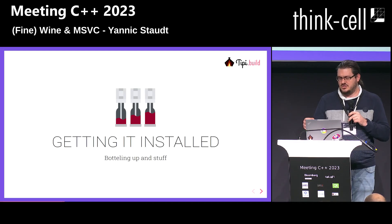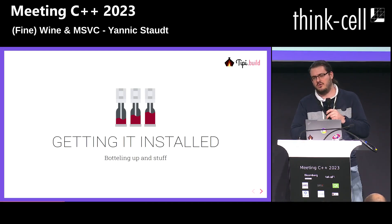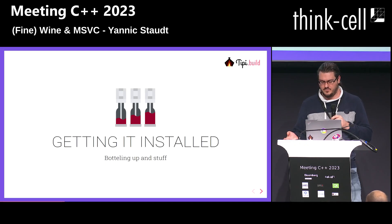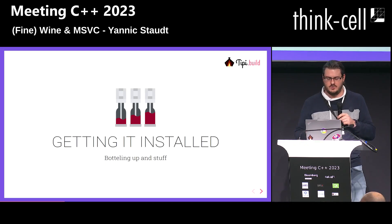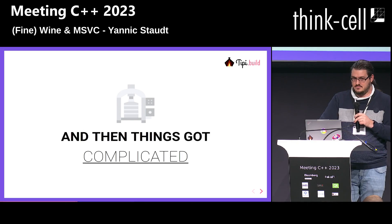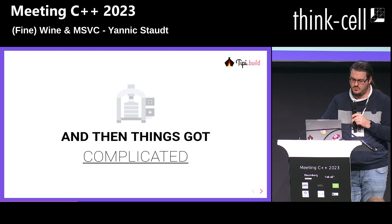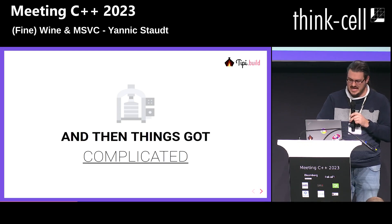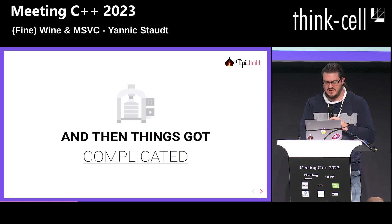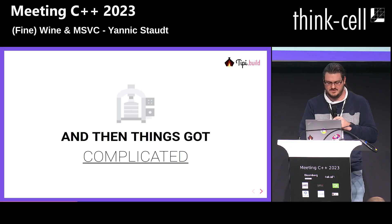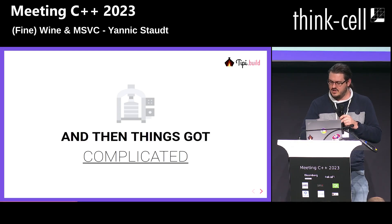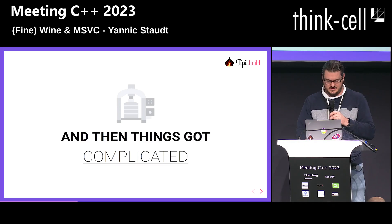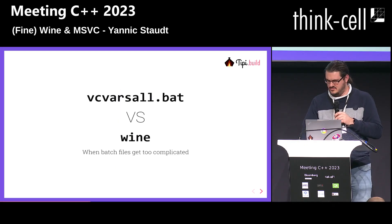The genius thing we found is that Microsoft publishes a JSON manifest containing all the URLs and paths of the things you need to download — you just have to figure out how to put them in the right place. We managed to solve this: it's a 1,500-line mess of Python at this point, but we managed to replicate the installer behavior of the MSVC installer and get a clean install on a Linux filesystem.